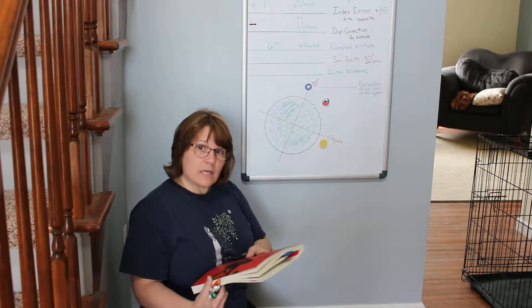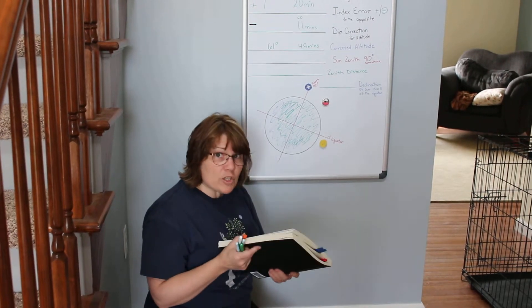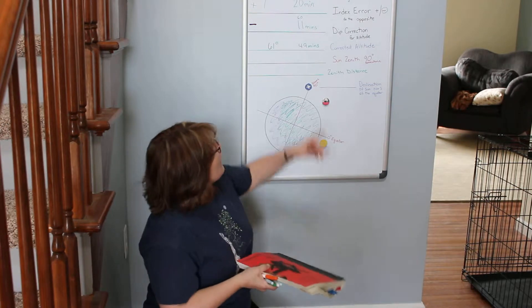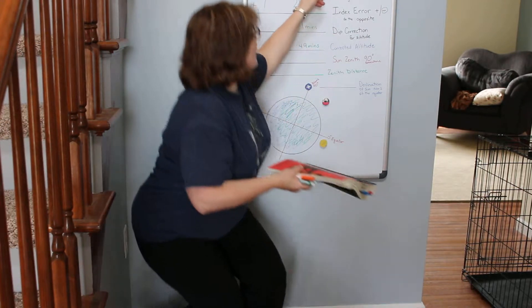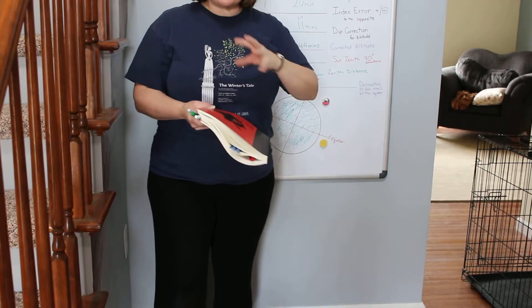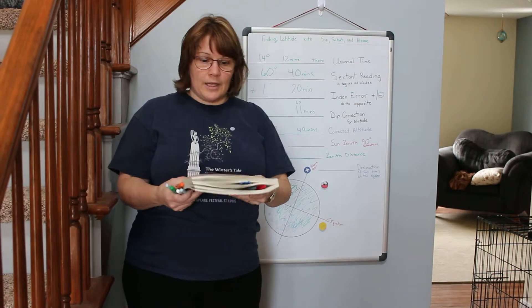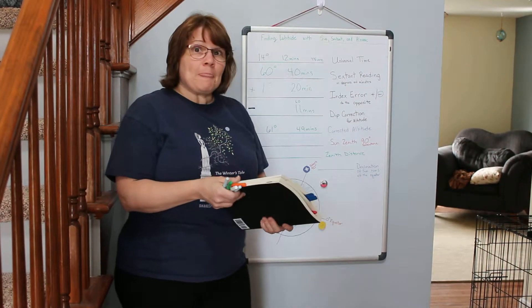So we look in this handy dandy almanac and it will tell us on the day we took the reading, and using our time, it will tell us what our declination is. We don't have to do any math. This is a huge plug for Nathaniel Bowditch who wrote the book, the Nautical Almanac.